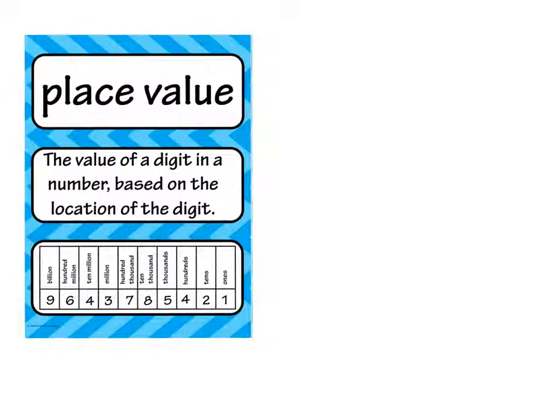Another review word is place value. The value of a digit in a number based on the location, or the place, of the digit. So you can see that here, we have the ones period, ones, tens, hundreds. We then have our thousands period, with 100,000, 10,000, and thousands.